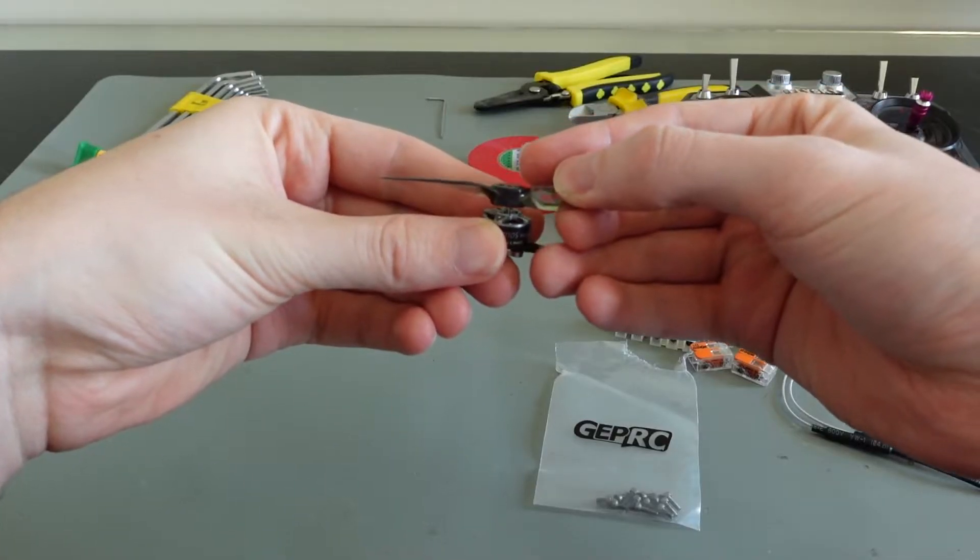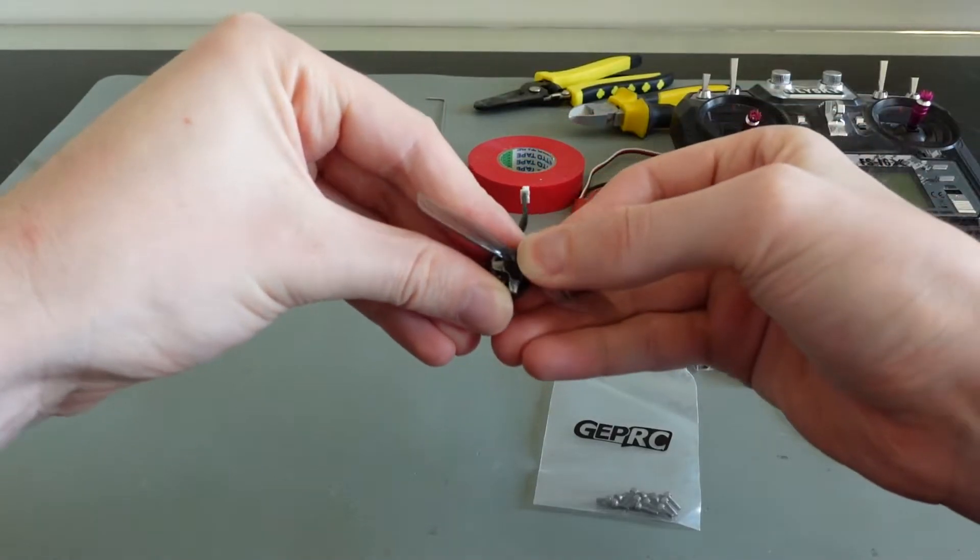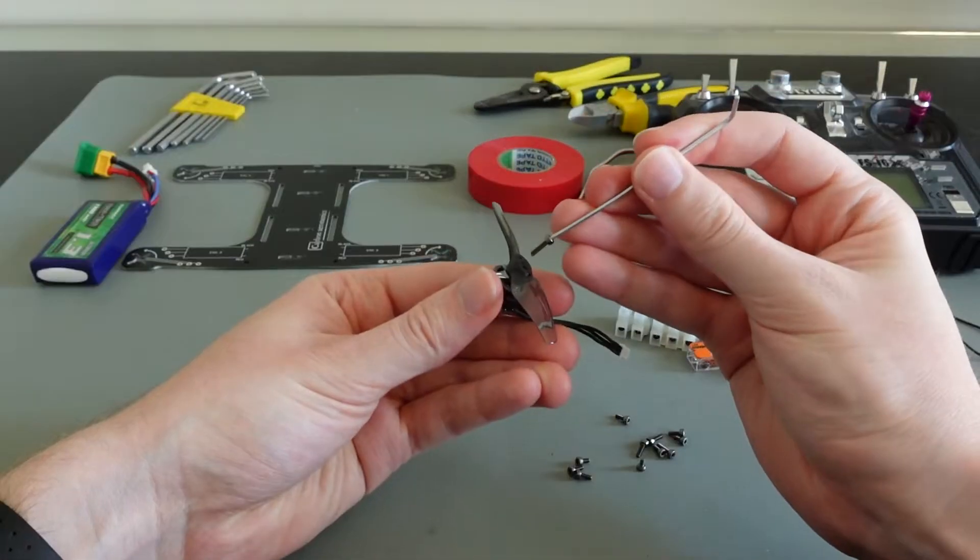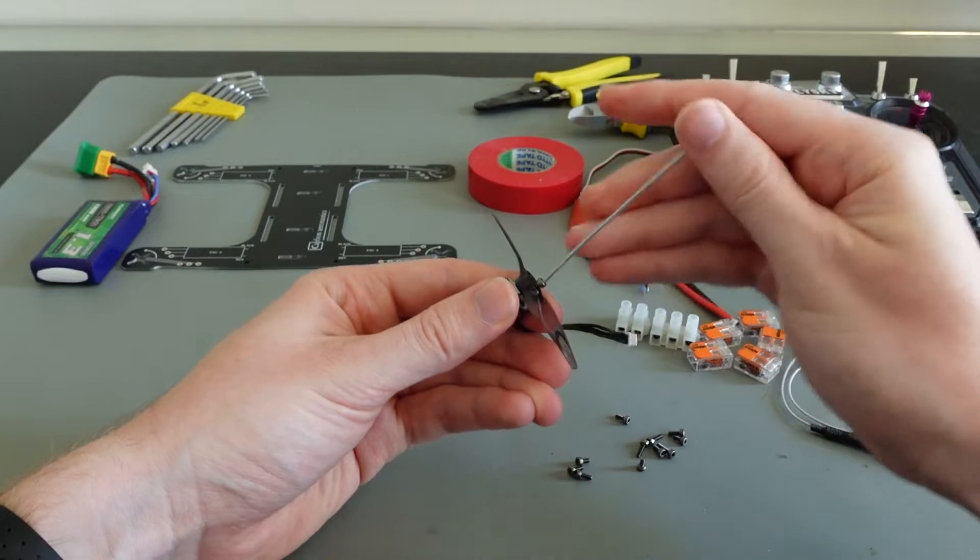Slide the 3 inch Gemfan propeller down the motor shaft and push it firmly on the top of the motor. Use two of the longest screws to fasten it.